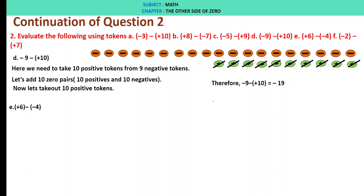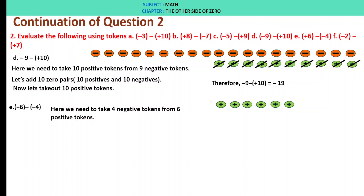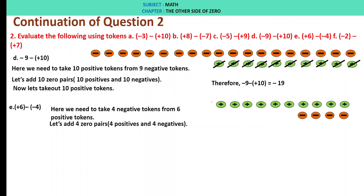E: plus 6 minus of minus 4. We have 6 positive tokens but need to take out 4 negative tokens. So let us add 4 zero pairs — 4 positives and 4 negatives. Upon adding, we take out 4 negative tokens. We are left with 10 positive tokens. Therefore, plus 6 minus of minus 4 is plus 10.